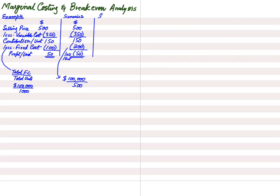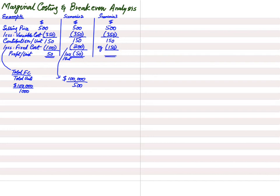Scenario three: again selling a shirt for $500, buying for $350, contributing $150 towards covering fixed costs. If we sell a certain number of shirts such that the fixed cost per shirt is exactly $150, contribution and fixed cost are equal, and what we get is zero — no profit, no loss. That is break-even.